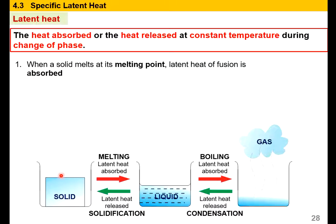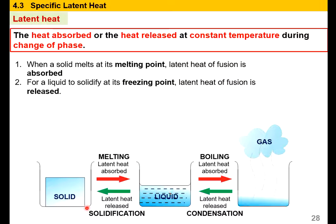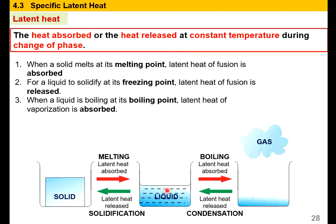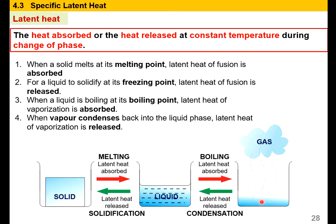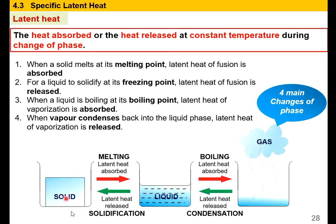For example, when solid melts at its melting point, latent heat of fusion will be absorbed to change it to liquid. For liquid to solidify back to solid at the freezing point, latent heat of fusion will be released. When liquid boils at its boiling point, latent heat of vaporization is absorbed so that it can become gas. For gas or vapor condensing back to liquid phase, latent heat of vaporization is released. So from solid to liquid, heat is absorbed; liquid to gas, also absorbed; gas to liquid, latent heat is released; liquid to solid, latent heat is also released. These are the four main changes of phase.